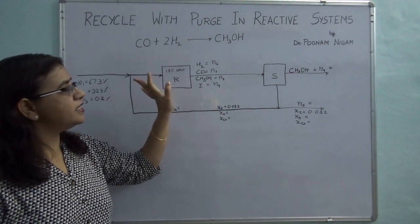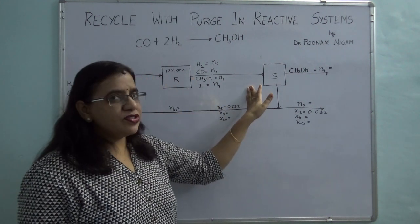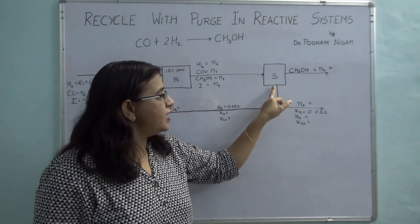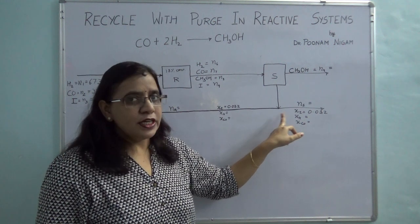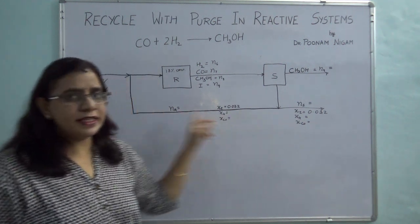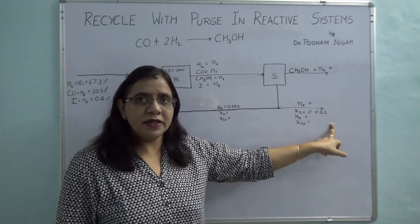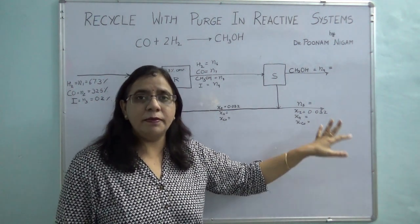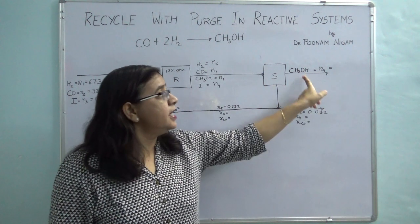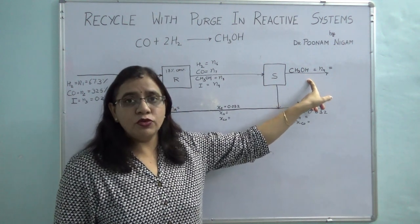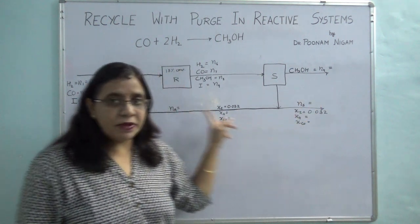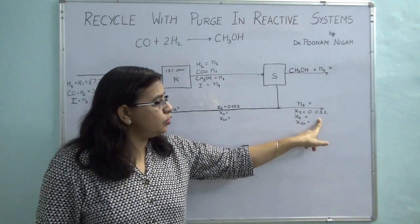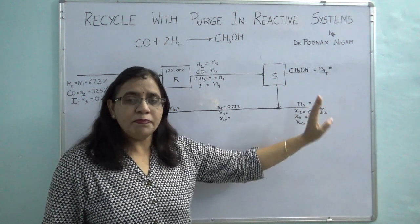Here 18% conversion takes place. The reactor effluent goes into a separator where methanol is completely separated, and the remaining stream is split into two portions — one is sent as a recycle and the other small stream is purged out. This purge is done mainly to avoid the build-up of inerts, because inerts do not find their way out with the product stream and will tend to build up in the recycle loop.